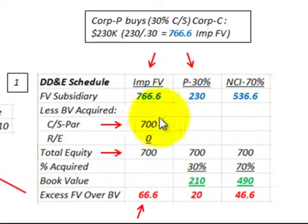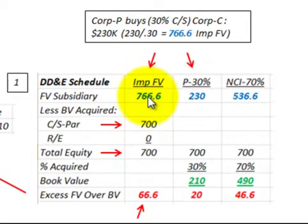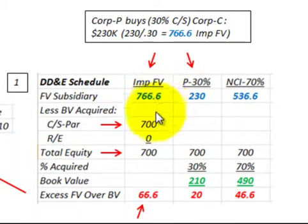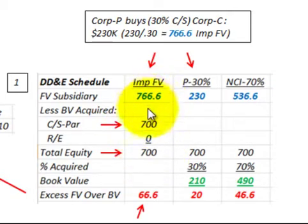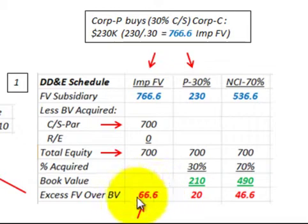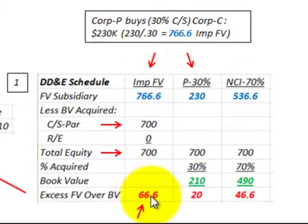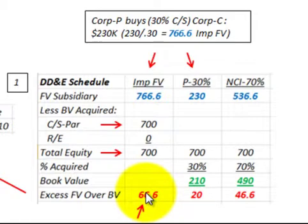The fair value we determined for corporation C was $766,600. Taking the difference between the total equity of $700,000 and the fair value of $766,600, we come up with an excess of fair value over book value of $66,600. That's why we set up this determination and distribution schedule — to identify this excess.